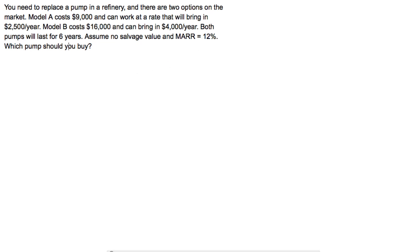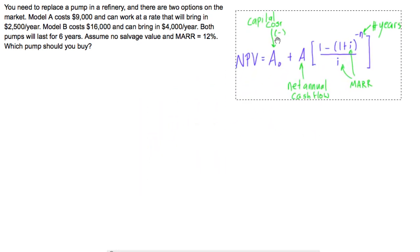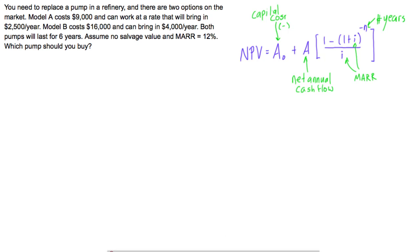We have the net present value formula already written out. This is the special case when we have the same annual net cash flow. The first term, A-naught, is the capital cost of the project — a negative term. The second term is the present value of an annuity formula, where A is the net annual cash flow ($2,500 or $4,000 for the two cases), i is the minimum acceptable rate of return, and n is the number of years.